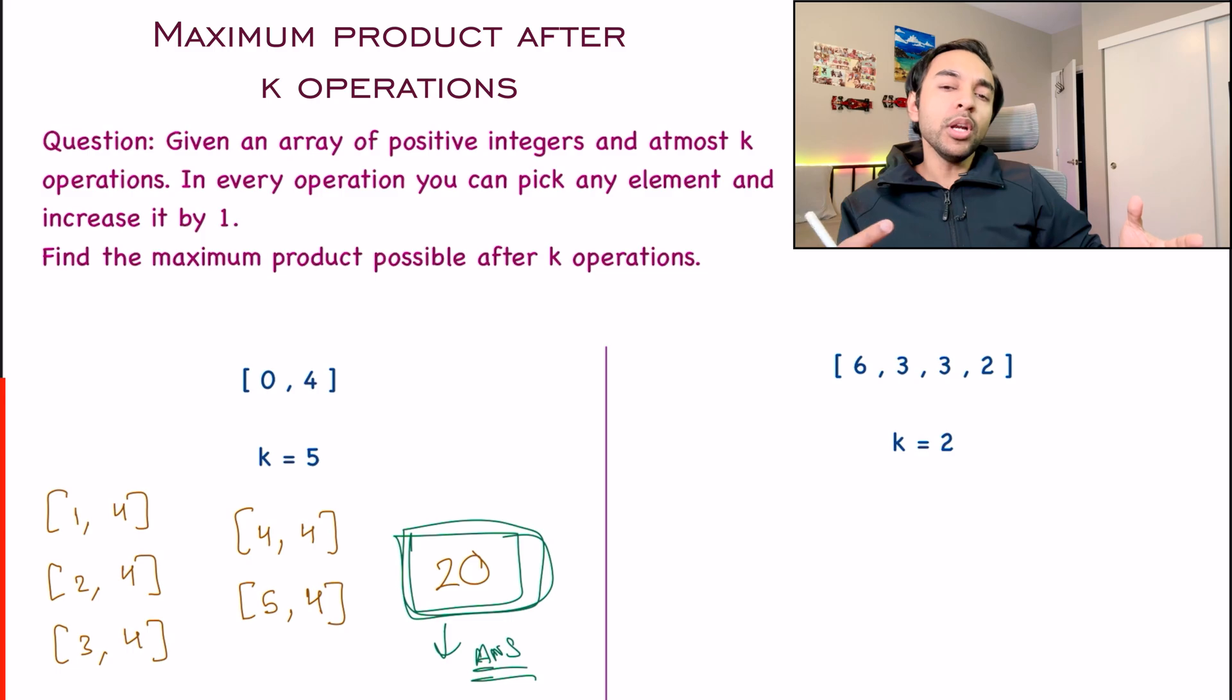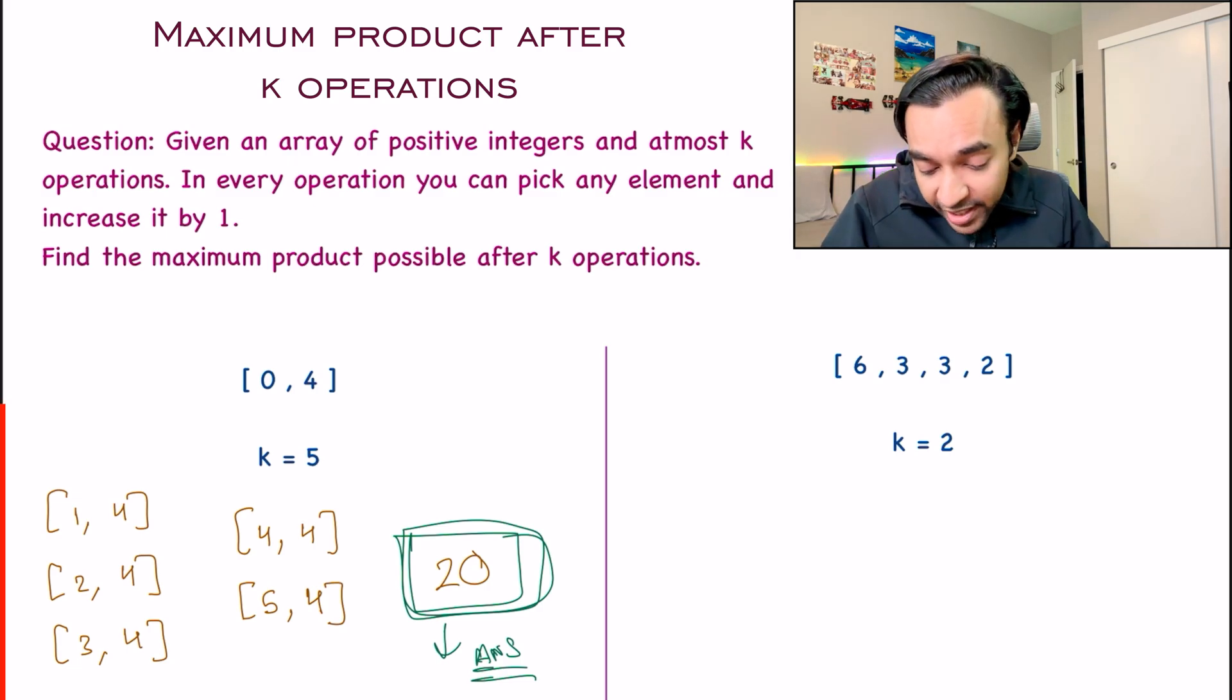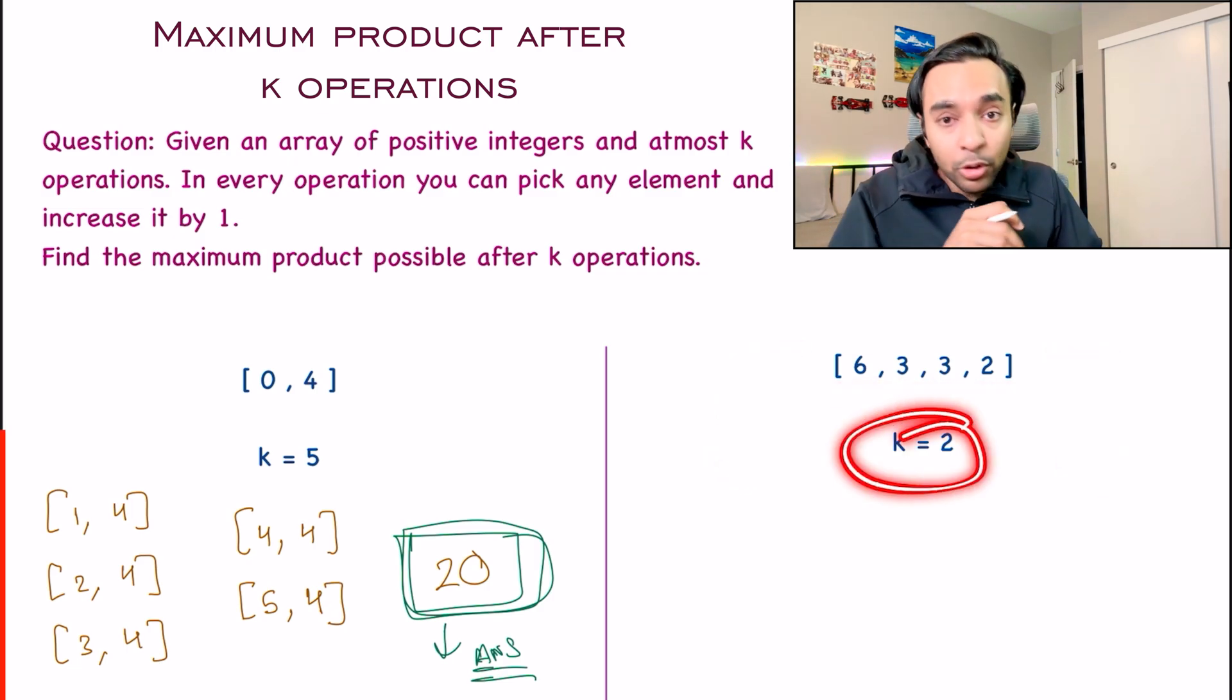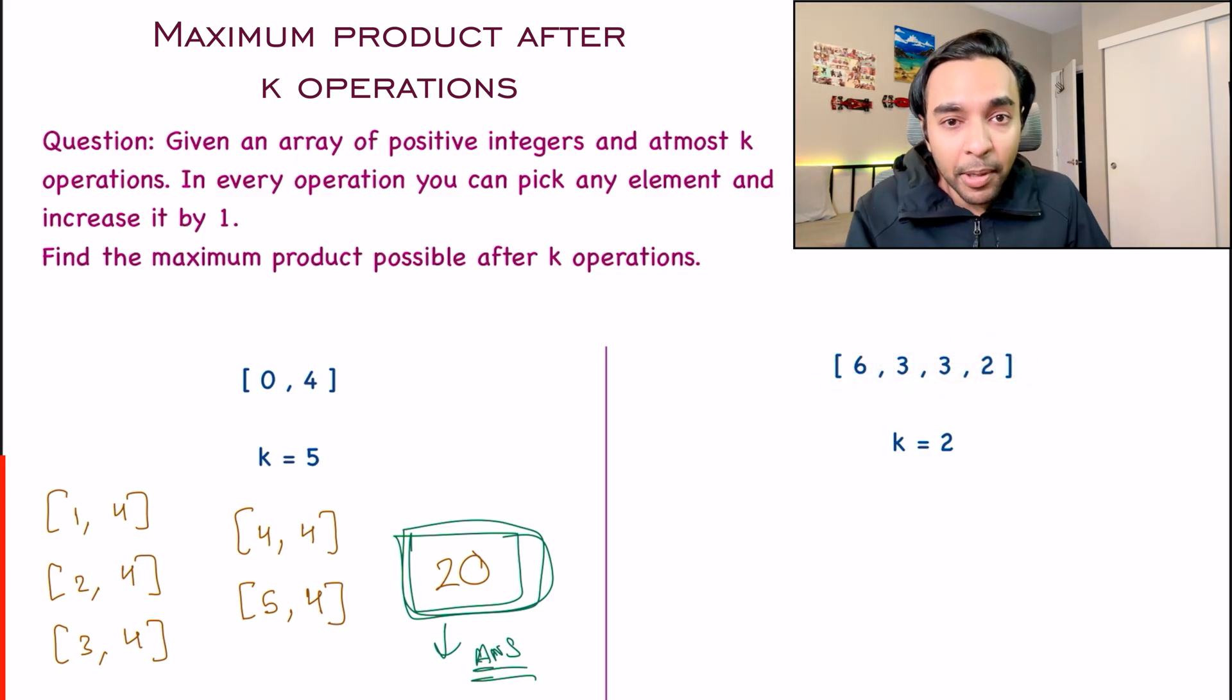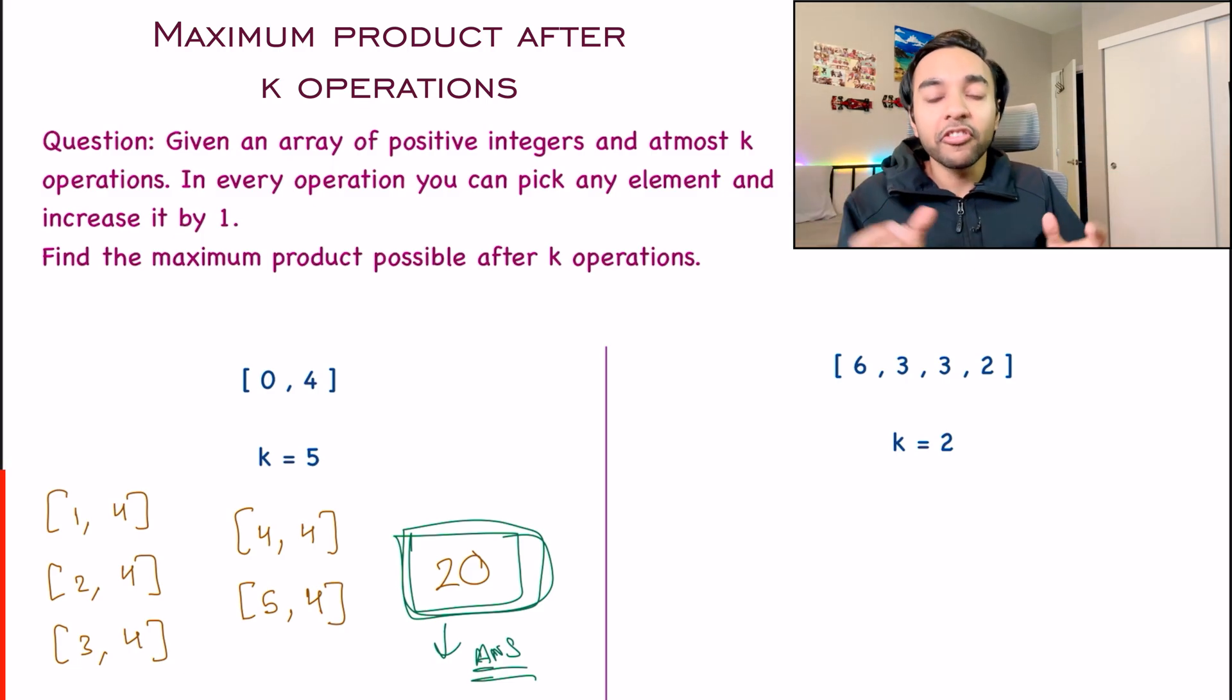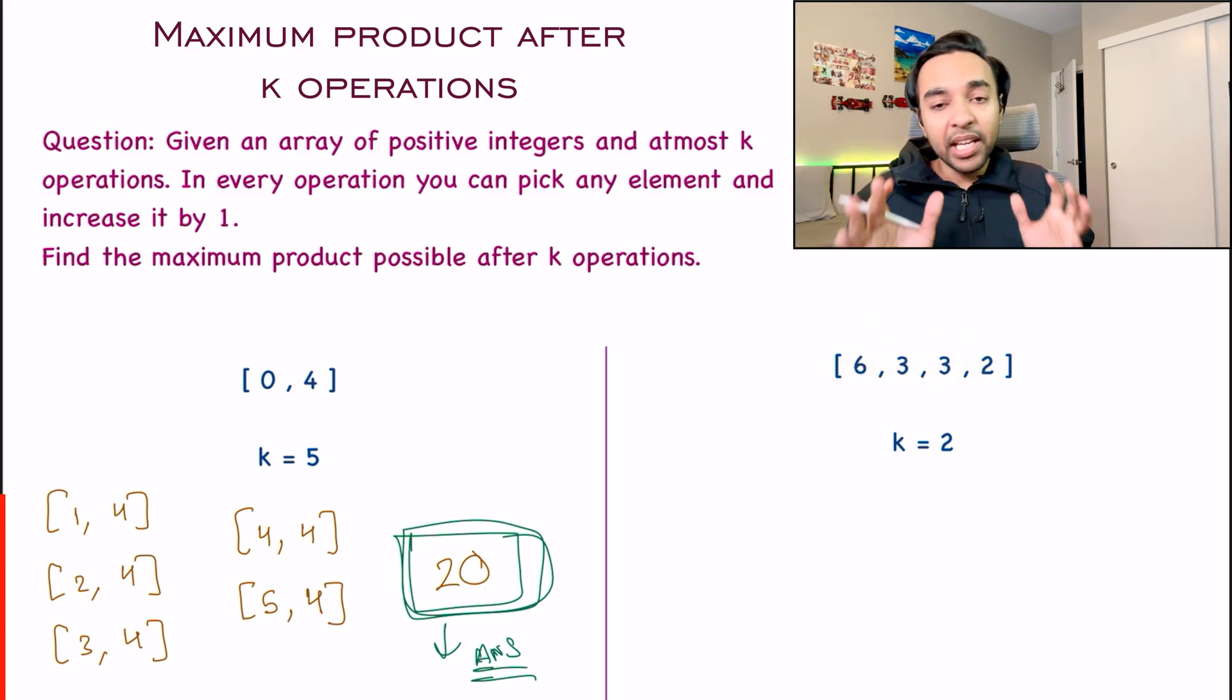You can see that there can be so many ways you can perform these k operations. And you have to tell me what is the maximum product possible when you are done with these k operations. So with two numbers, at least you can say that, okay, the number of operations could be easy. But this array can be of any length. For example, in my second array, I have an array of the length 4. I have these 4 elements [6,3,3,2] and I am allowed 2 operations.